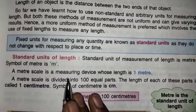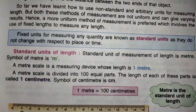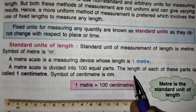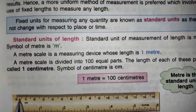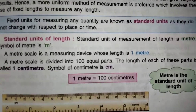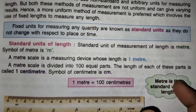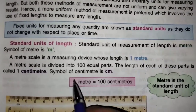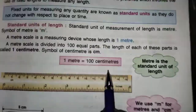A meter scale is a measuring device whose length is 1 meter. A meter scale is divided into 100 equal parts. The length of each of these parts is called 1 centimeter. So 1 meter is divided into 100 equal parts — 1, 5, like this way, up to 100. The symbol of centimeter is CM. 1 meter is equal to 100 centimeters.